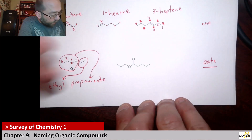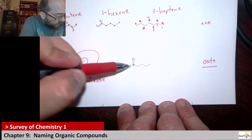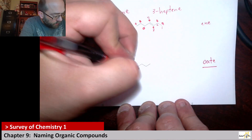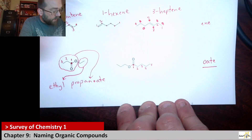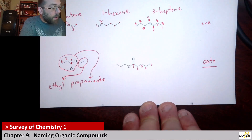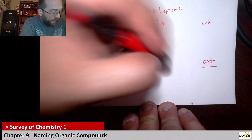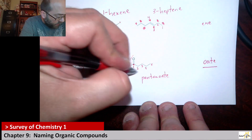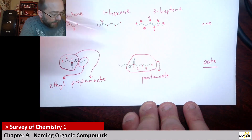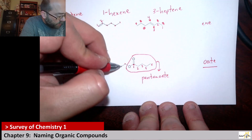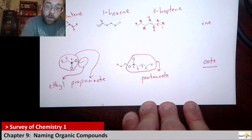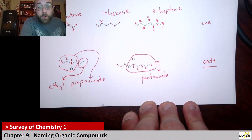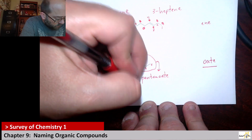Using that same idea here, we have a carbon with the double-bonded oxygen and the single-bonded oxygen — understood to be carbon number one. That's one, two, three, four, five, so instead of propanoate it's now called pentanoate. And then we have a one, two, three carbon chain coming off of it — three carbons is propyl. So this is called propyl pentanoate.